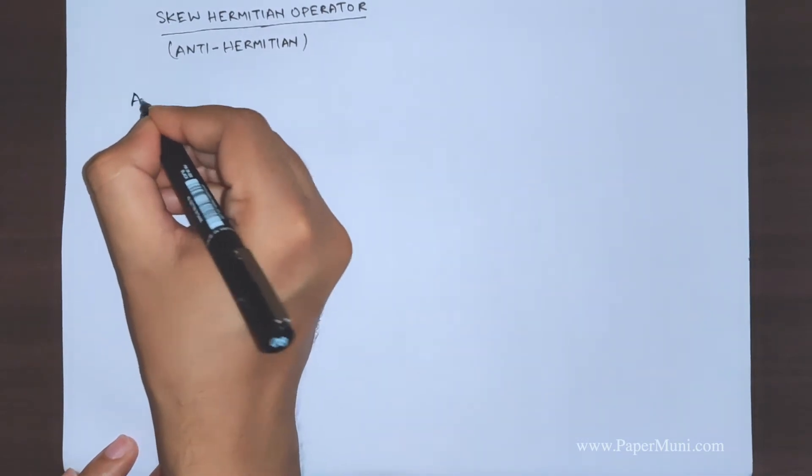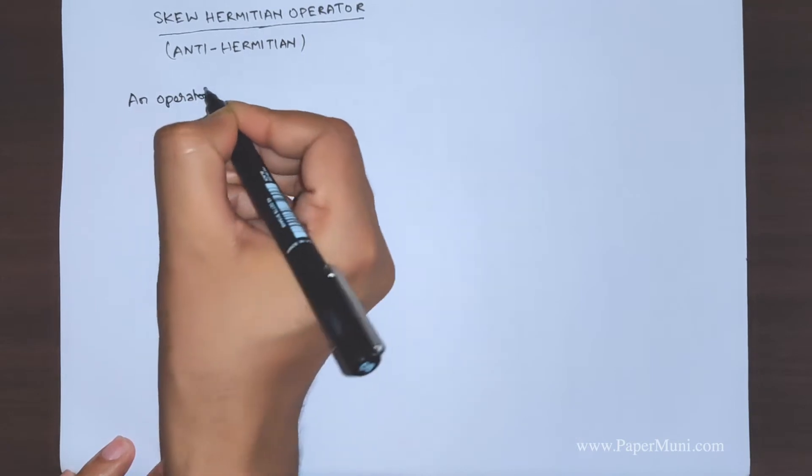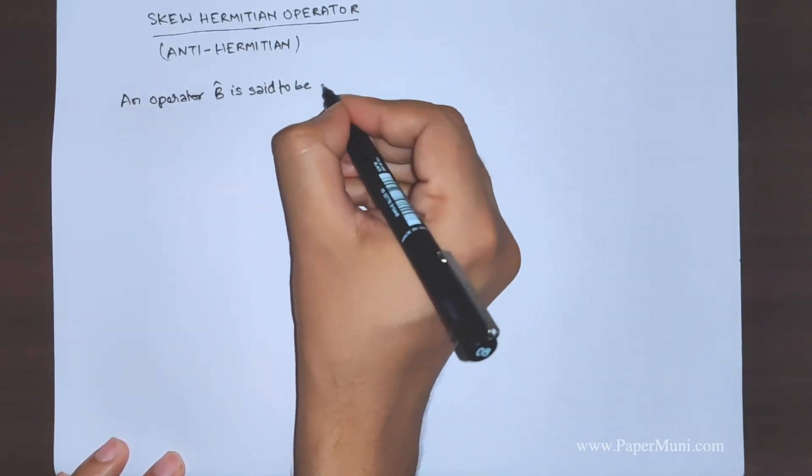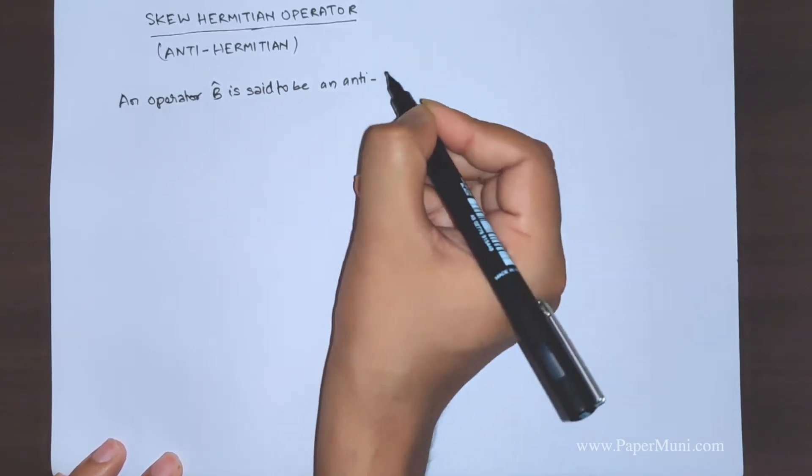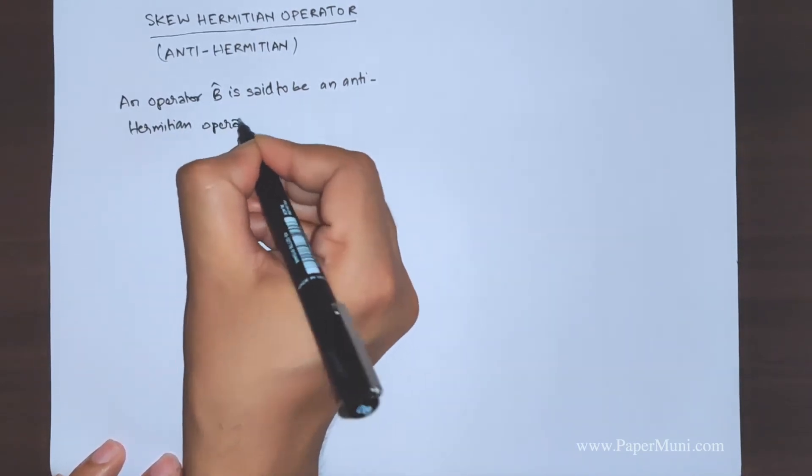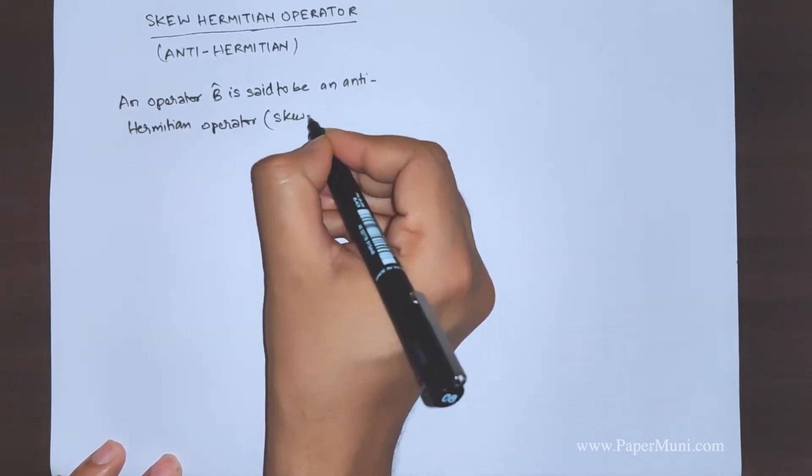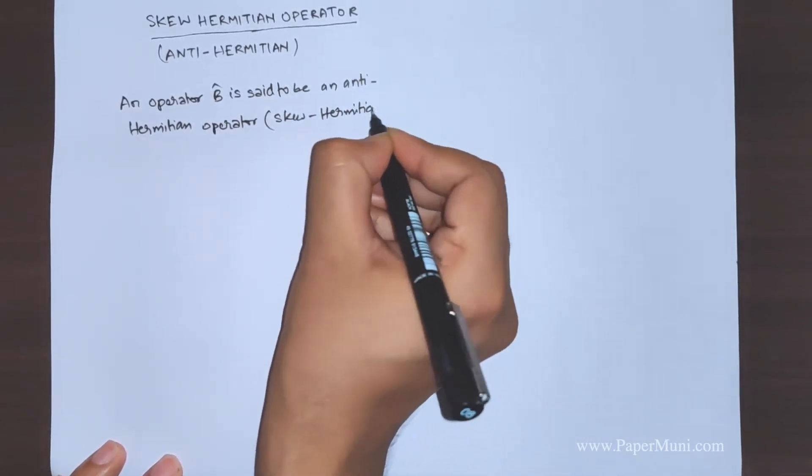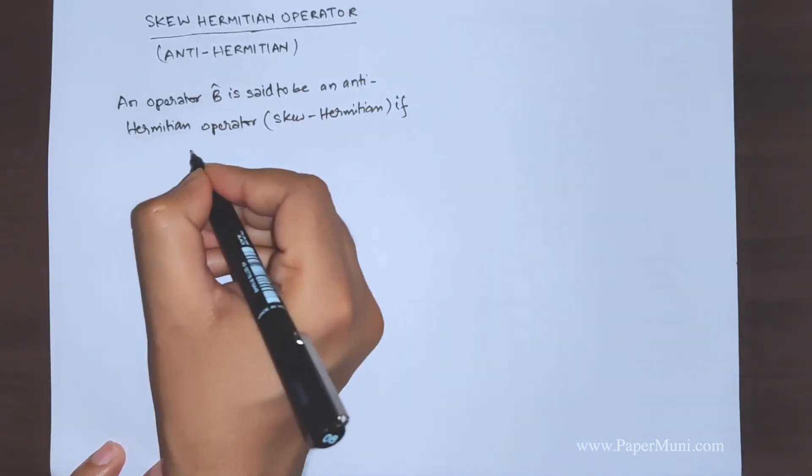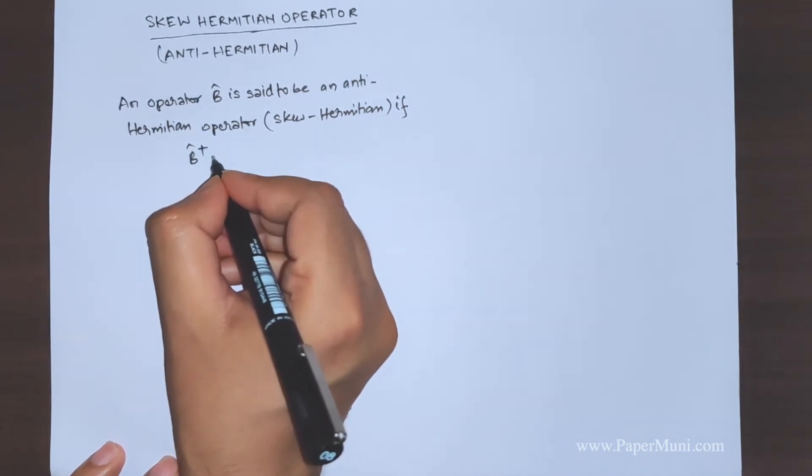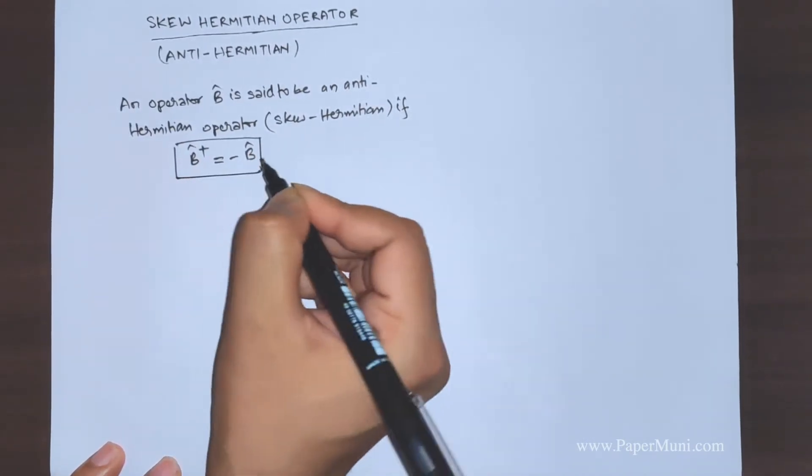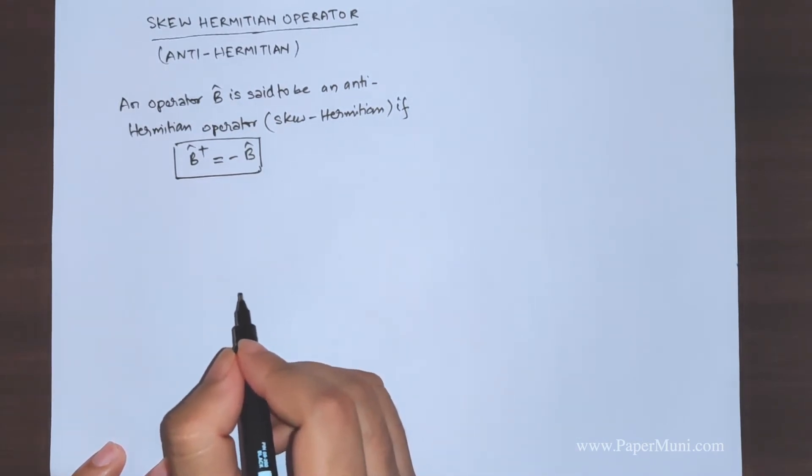Now an operator B is said to be an antihermitian operator, or you can say skew hermitian. Either of the name will be mentioned in the question paper. If B, if you take a complex conjugate or a hermitian adjoint, should give you minus of that operator. This is the condition for an operator to be called a skew hermitian or an antihermitian operator.